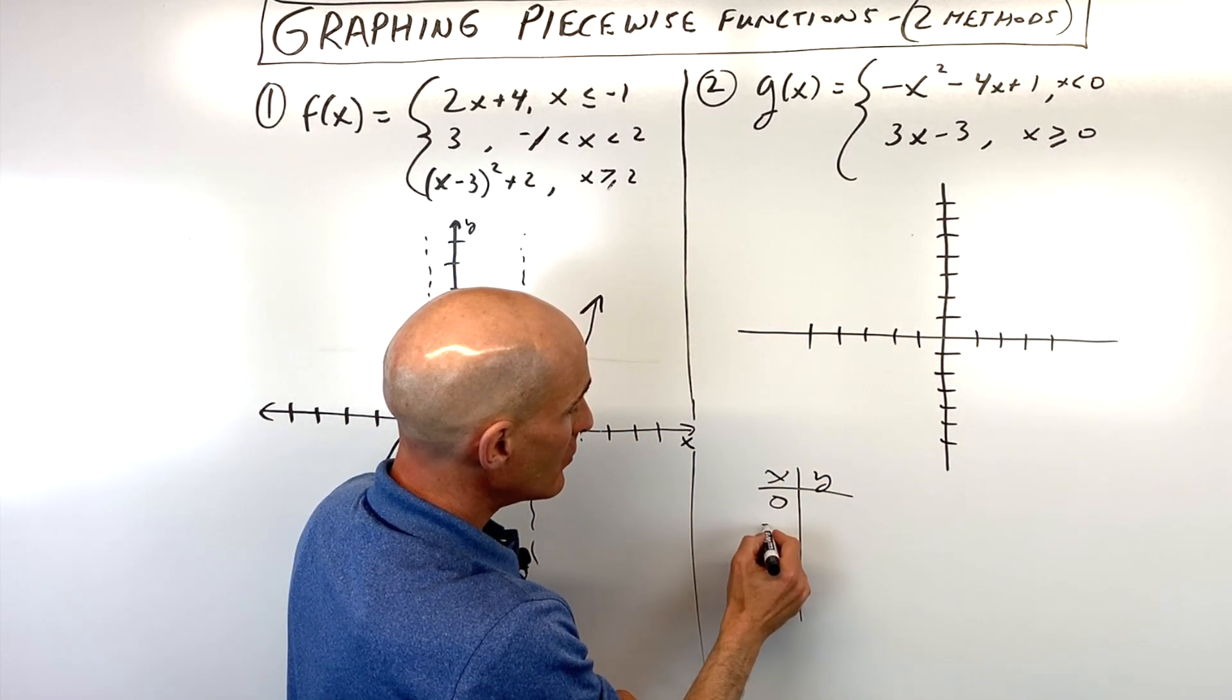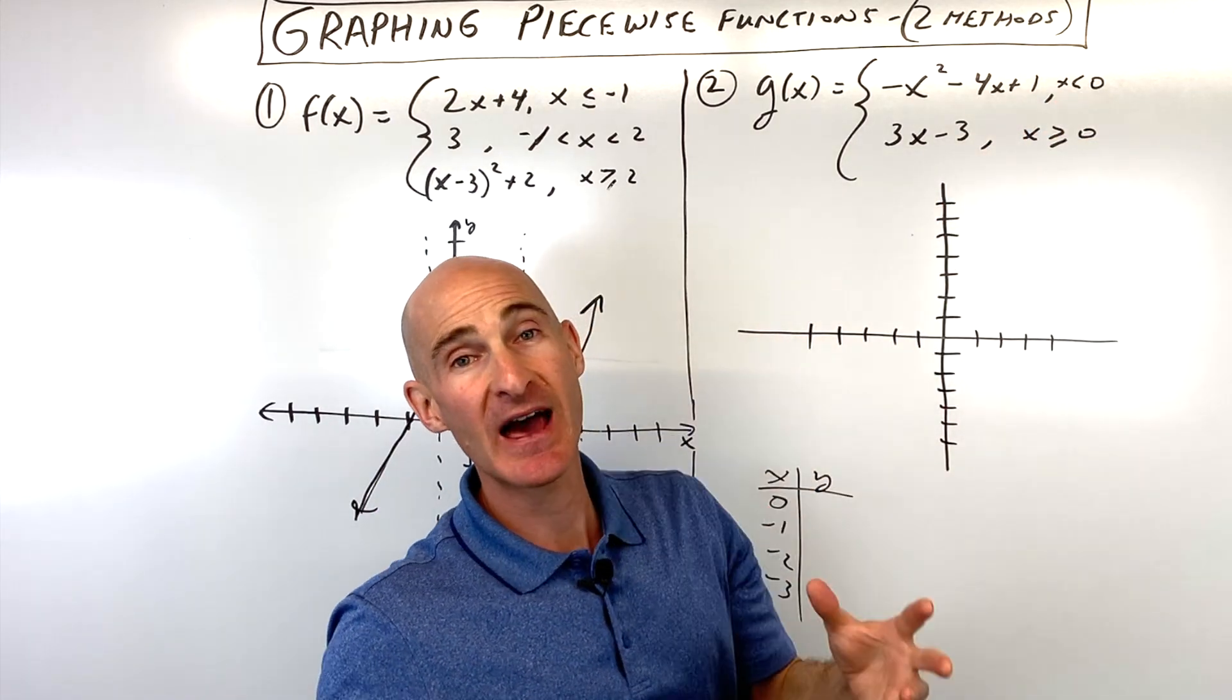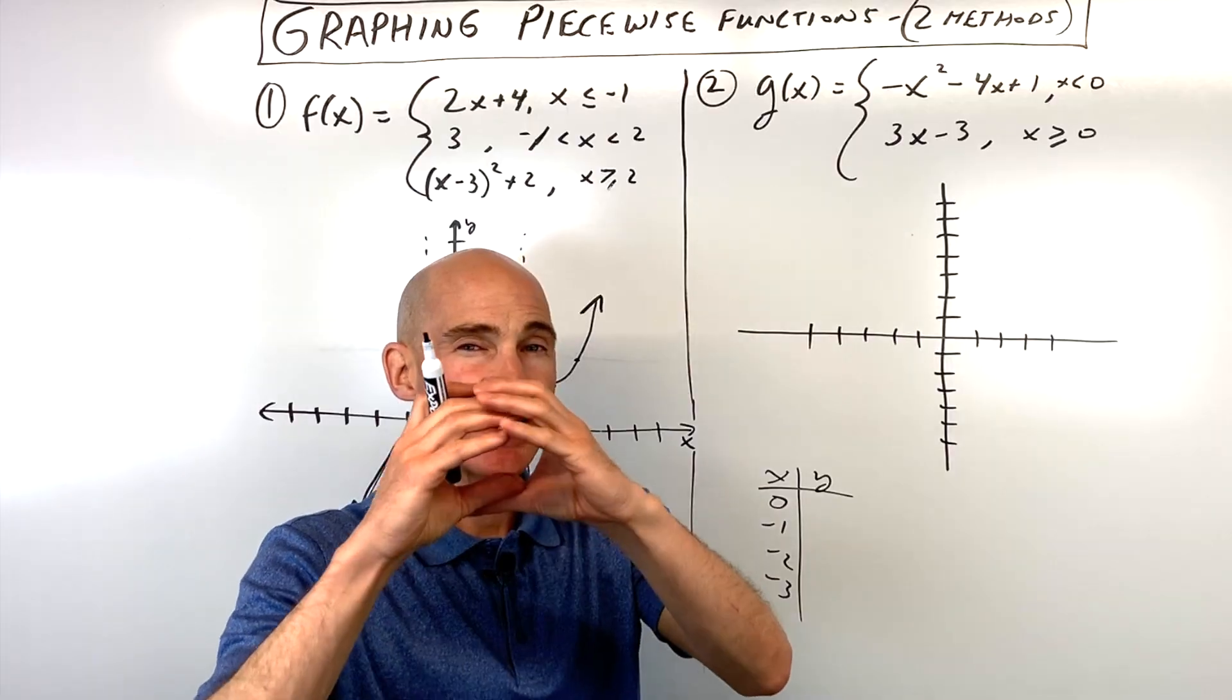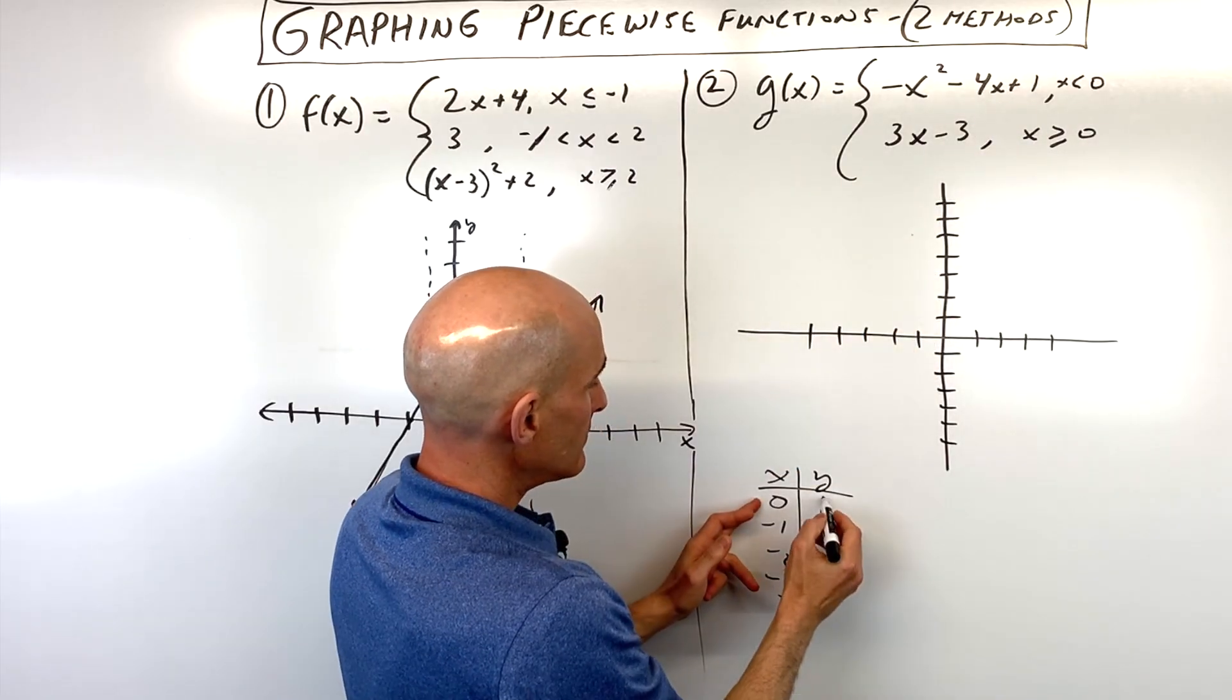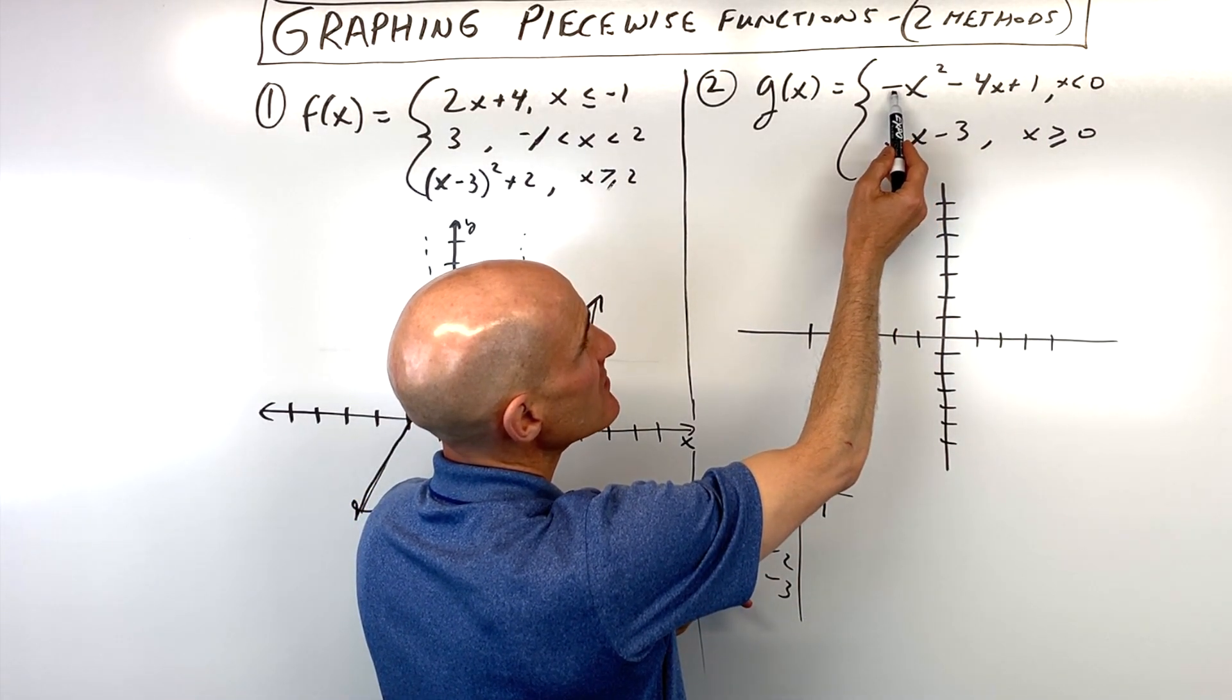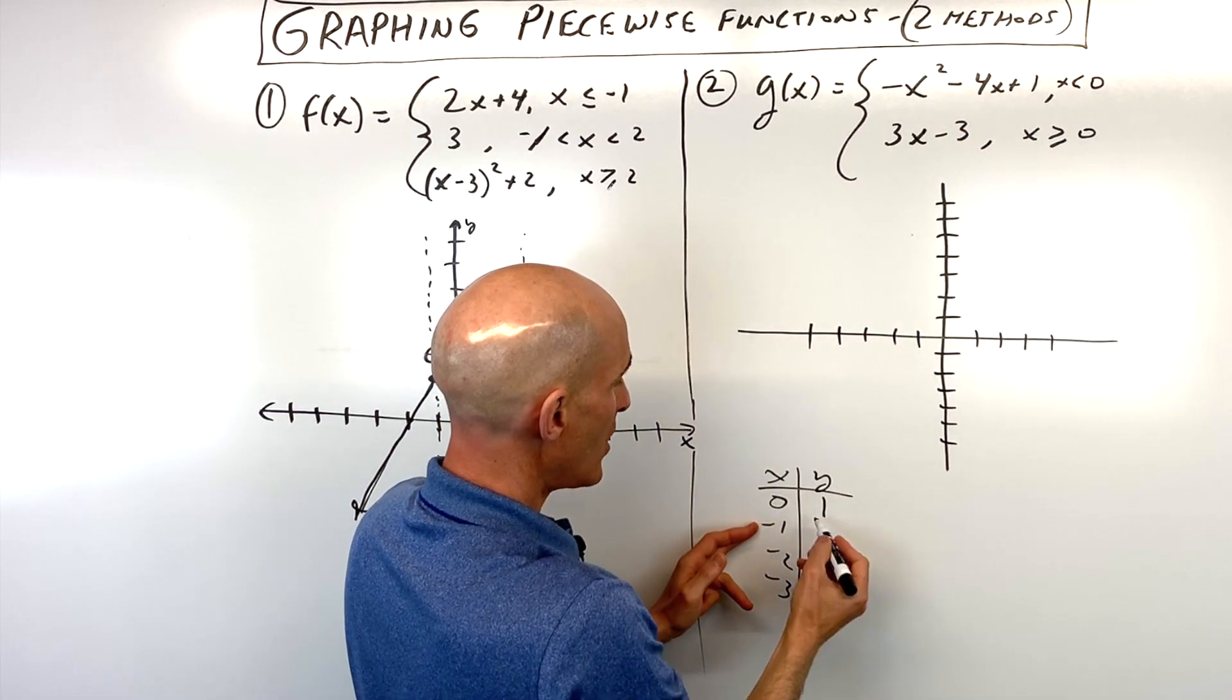Now 0, negative 1, negative 2, negative 3. Now you might be saying, well Mario, this is less than but not equal to 0. But we're going to still put that point 0 in. I'm just going to draw it as an open circle on the graph because it doesn't include 0. So let's put 0 in. We get 1. If I put negative 1 in, I get negative 1 squared is 1 times negative is negative 1. This will give you positive 4. So that's 3 plus 1 is 4.